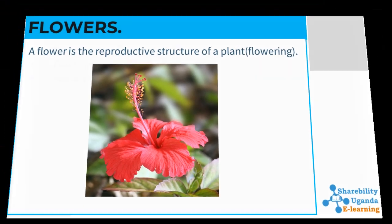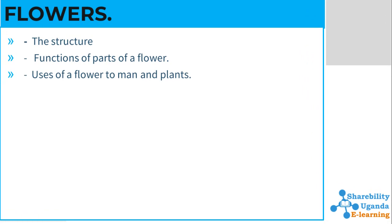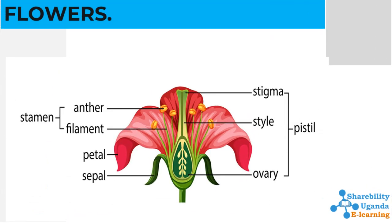We shall also look at the functions of the parts and the uses of the flower to man and the plant itself. Flowers are important in making seeds. Flowers can be made up of different parts, but there are some parts that are basic. The main flower parts are the male part called the stamen and the female part called the pistil.